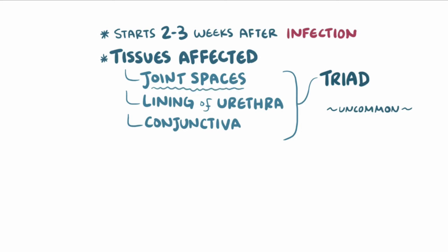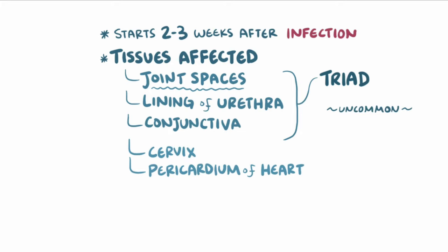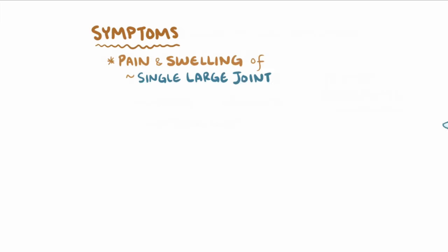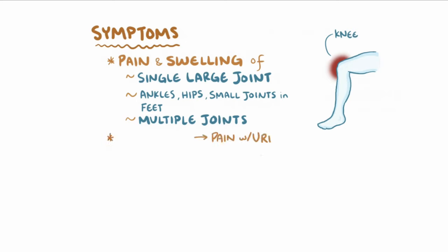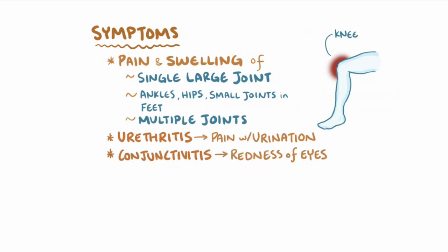Other tissues that are sometimes involved include the cervix in women and the pericardium of the heart. Symptoms of reactive arthritis mainly involve pain and swelling of a single, large joint, like the knee. Less often it can involve other joints like the ankles, hips, and small joints in the feet, or affect multiple joints. Other symptoms can include pain with urination when urethritis is present and redness of the eyes in the case of conjunctivitis, but these are less common.